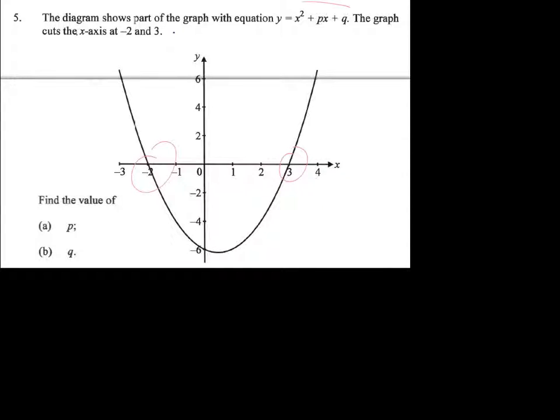We're asked to put it into standard form, but we'll notice here that the coefficient of x squared is 1. So we can interpret straight away that this is going to be less complicated than it could be. Similarly, we've been given the intercepts here, so it makes sense to use the intercept form.